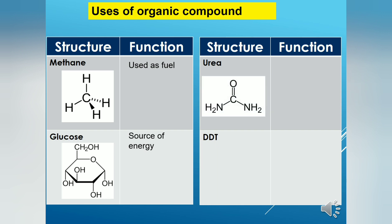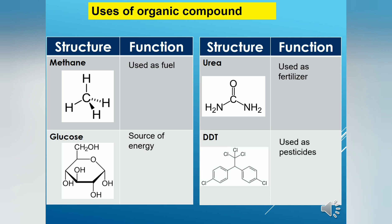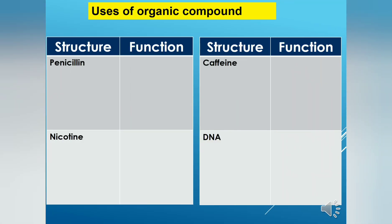Urea is popular as a fertilizer due to its high level of nitrogen, and DDT is used as a pesticide for insect control. Penicillin is used as an antibiotic to treat bacterial infection.